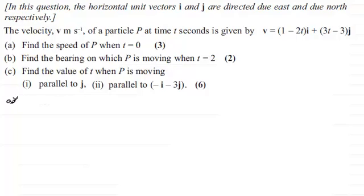Now in part A we've got to find the speed of p when t equals 0. And speed is given as the magnitude of our velocity vector. So I just need to first of all find out what that velocity vector is when t equals 0. So if we substitute 0 into here for t we end up with v equaling simply 1i or just i. And then we've got minus 3j.